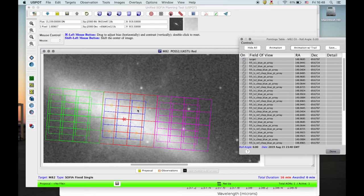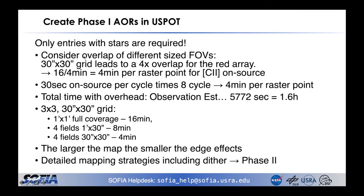Since we need 16 minutes total, but each raster point gets 4x coverage in the center, we only need a quarter of that per pointing — 16 divided by 4 = 4 minutes per raster point. With 30 seconds on-source time per cycle, we need 8 cycles to get 4 minutes per raster point.